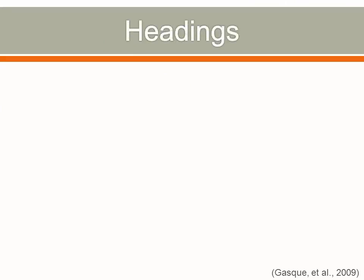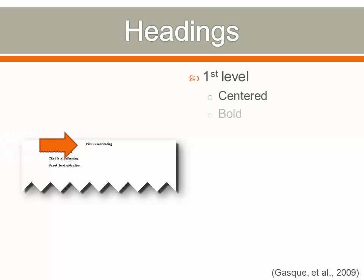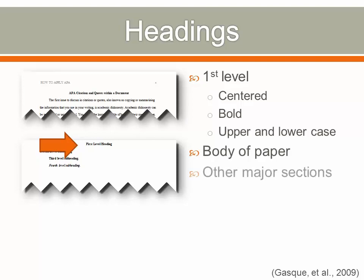APA provides specific formats for major headings and subheadings. While there are multiple levels of headings available, here we demonstrate the first three levels, which is appropriate for most papers. However, longer papers may require additional levels. The first level heading is centered, bold, upper and lower case, and is considered the major heading. It includes the document title on the first page of the body of the paper and can also include other major sections.